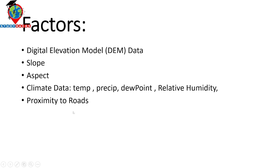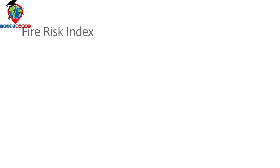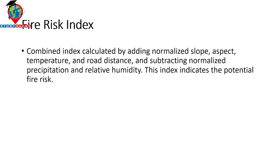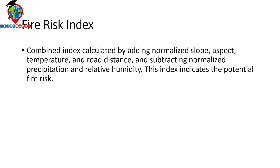In this session I include factors: DEM, slope, aspect, climate data, and distance to road. If you want, you can also add more factors such as land use/land cover, human activity, fire management practices, historical fire data, vegetation type data, or fuel load data. The Fire Risk Index used here is a combined index calculated by adding normalized slope, aspect, temperature, and road distance, and subtracting normalized precipitation and relative humidity. This index indicates the potential fire risk.